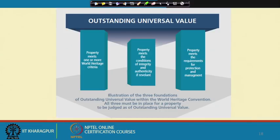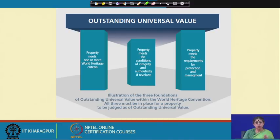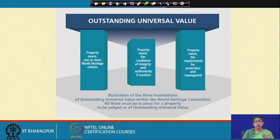There are three pillars of outstanding universal value. First, the property must meet one or more of the ten heritage criteria — six cultural and four natural, and also mixed properties. Then there is integrity and authenticity, which we will take up with examples. And becoming increasingly important is management — how the state party, given world heritage site status, can take care of these inscribed sites.